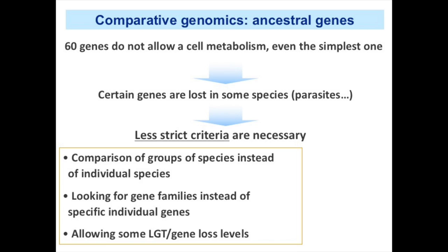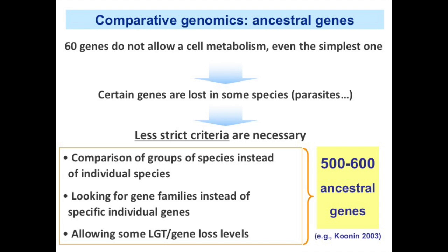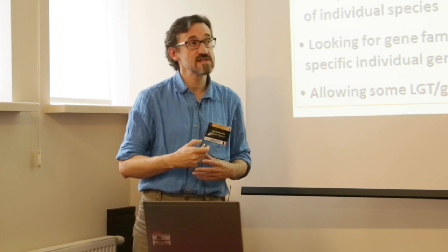Several groups have tried to do this using different approaches — for example, by allowing some degrees of lateral gene transfer and gene loss — and when you do that you arrive at a list of at least 500 ancestral genes, which is one order of magnitude larger than the initial 60.